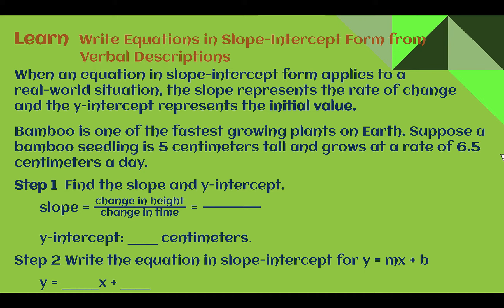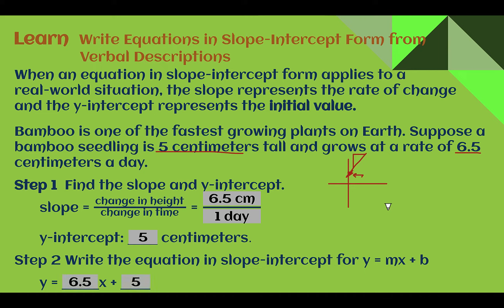Bamboo is one of the fastest growing plants on earth. Suppose a bamboo seedling is five centimeters tall and grows at a rate of 6.5 centimeters a day. It started at five, not at zero — so instead of the graph starting at zero, it starts at five and then grows. The slope is 6.5 centimeters every one day, so m equals 6.5. The y-intercept is where it starts: five. So our equation for this bamboo would be y equals 6.5x plus five.